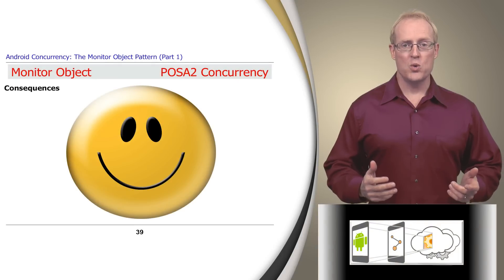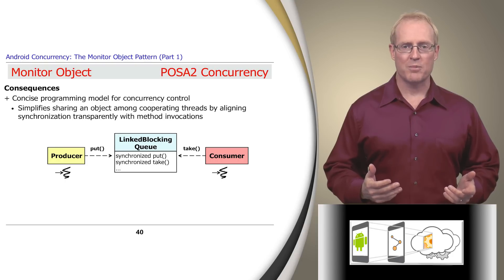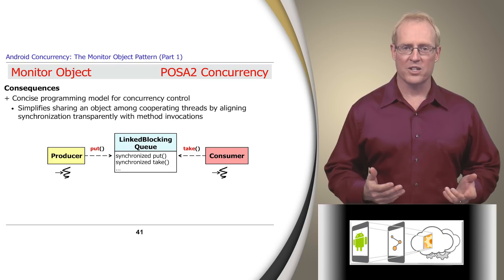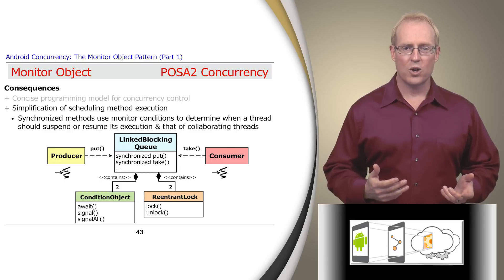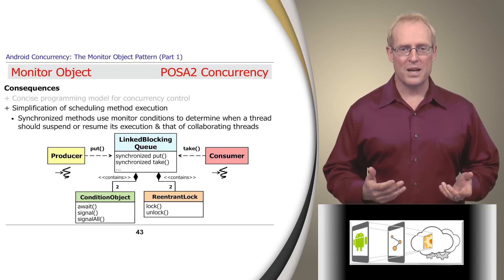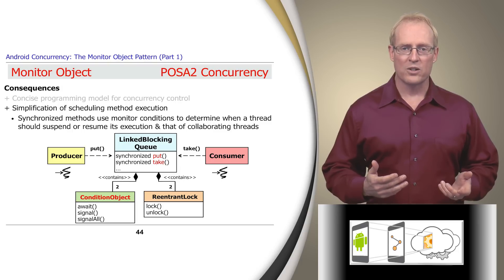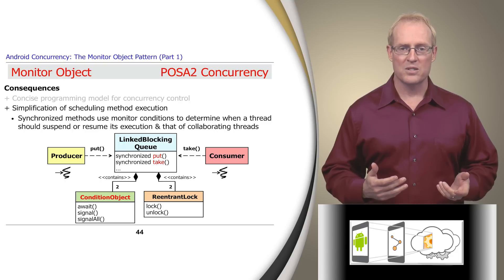The monitor object pattern provides two key benefits to developers of concurrent software. First, it presents a concise programming model for sharing an object among cooperating threads — for example, concurrent access to a LinkedBlockingQueue corresponds to conventional method invocations, and clients need not be concerned with explicit serialization mechanisms. A second benefit is that synchronized methods can use their monitor conditions to determine when a thread should suspend and resume execution, allowing put and take methods on a LinkedBlockingQueue to wait without inefficient polling, enabling monitor objects to cooperatively execute their methods in multiple threads.